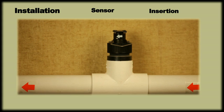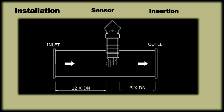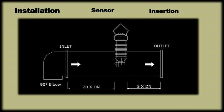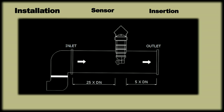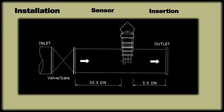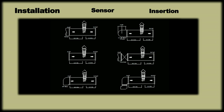Maintain a minimum inlet straight pipe length as per the following guidelines: 12 times pipe diameter in case of straight run, 15 times pipe diameter in case of reducer, 20 times pipe diameter in case of 90 degree elbow, 25 times pipe diameter in case of two 90 degree elbows, 40 times pipe diameter in case of elbows in different plane, 50 times pipe diameter in case of gate or globe valve. The minimum outlet pipe straight length must be 5 times the pipe diameter in all cases.